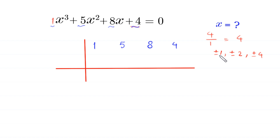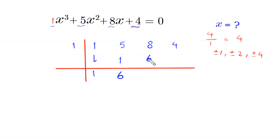We try one of these factors. First, we try positive 1. This 1 comes down as it is. We multiply this 1 by 1, we get 1. We add 5 plus 1 to get 6. We multiply 6 by 1 to get 6. We add 8 and 6 to get 14. We multiply 14 by 1 to get 14. And 4 plus 14 is 18 — that is not equal to 0. We keep trying until we get 0 here.